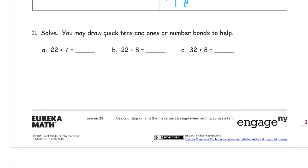And solve. You may draw quick tens and ones or number bonds to help. So 22 plus 7. If I was going to draw this with quick tens, I would draw the 22 first: 1, 2, and then 7 more: 1, 2, 3, 4, 5, 6, 7. And I can count it all. That's 7 x's, 8, 9.